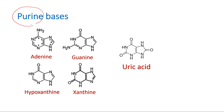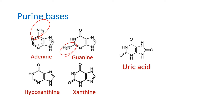Purine — the name is small but the ring is big. You can see the nine-membered ring. Purine bases are adenine and guanine. Adenine is 6-aminopurine. Guanine is 2-amino, 6-oxo or 6-ketopurine.